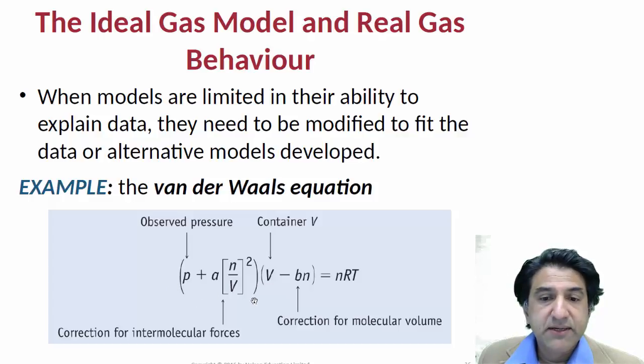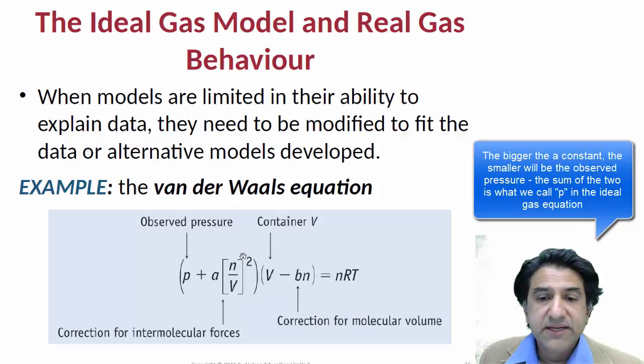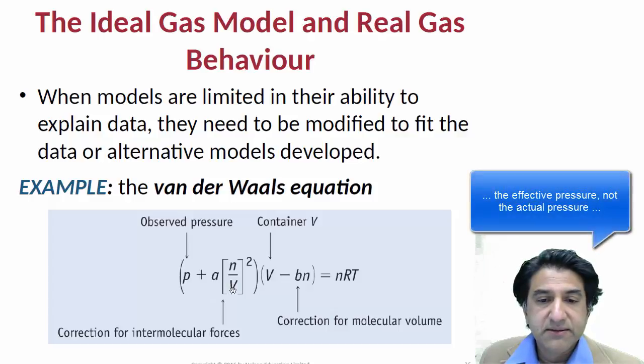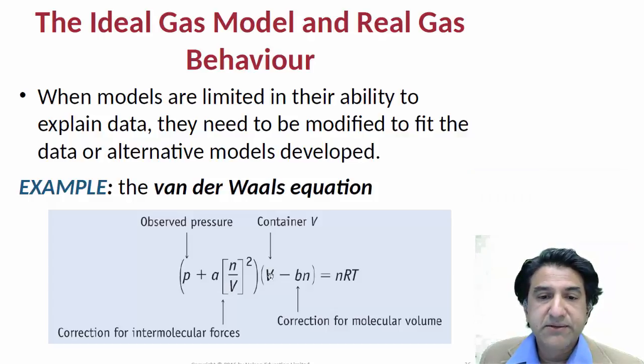Likewise, there's a correction for the observed, for the pressure appearing in PV equals NRT. We have the observed pressure here, plus a correction for intermolecular forces. A constant A times N on V, which is essentially the mole density, N on V squared. So as the density of the gas increases, we get a correction to the observed pressure. In fact, the pressure increases in this correction. The actual pressure is higher than the observed pressure as the density of the gas increases, depending on this constant.